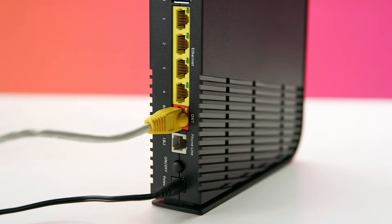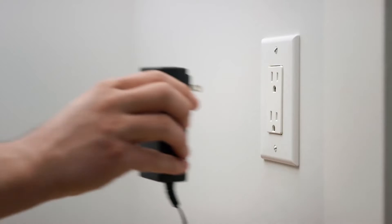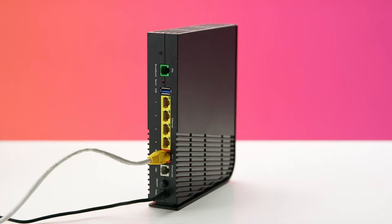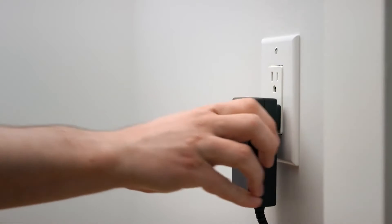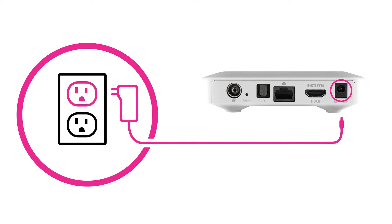If you're experiencing poor video quality, a quick problem solver is to unplug your gateway for one minute, then plug it back in. After about three minutes, unplug your media boxes also for one minute, then plug them back in. Often, doing this solves some problems you may experience with MaxTV Stream.